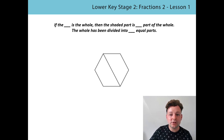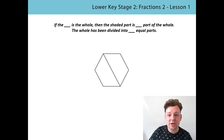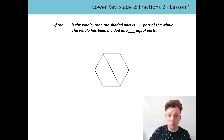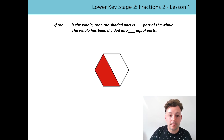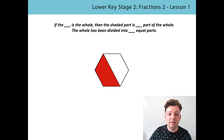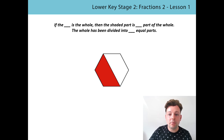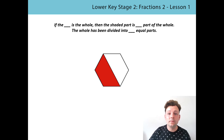This time we're going to break each of those shapes down into smaller steps. Some of the equal parts will be shaded. Remember, each shape is the whole. I wonder if you can see how many parts are shaded in each of the whole shapes. Have a look at the stem sentence at the top of this page and see if you can read it after me: If the hexagon is the whole, then the shaded part is one part of the whole. The whole has been divided into two equal parts. Pause the video now and have a try at saying the stem sentence.